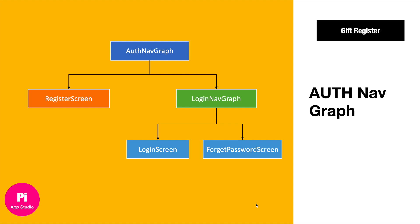In the auth nav graph, we have one nav graph with a login screen and one register screen — to register new users. And a login screen. In case the user forgot the password, we will provide them information on how to recover the password.